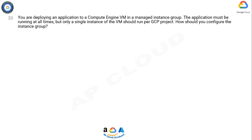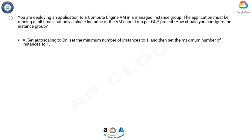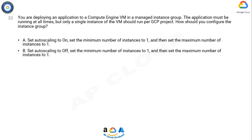You are deploying an application to a Compute Engine VM in a managed instance group. The application must be running at all times, but only a single instance of the VM should run per GCP project. How should you configure the instance group? Option A: set auto scaling to on, set the minimum number of instances to one, and set the maximum number of instances to one. Option B: set auto scaling to off, set the minimum number of instances to one, and set the maximum number of instances to one.